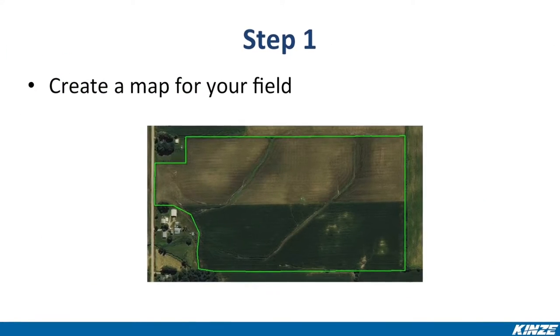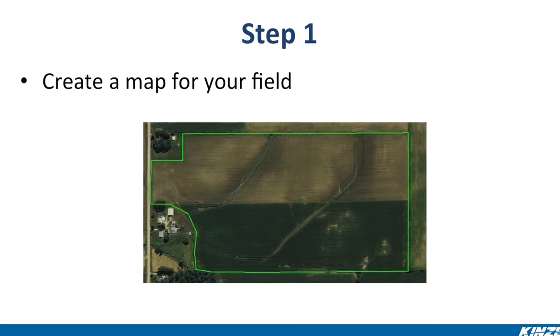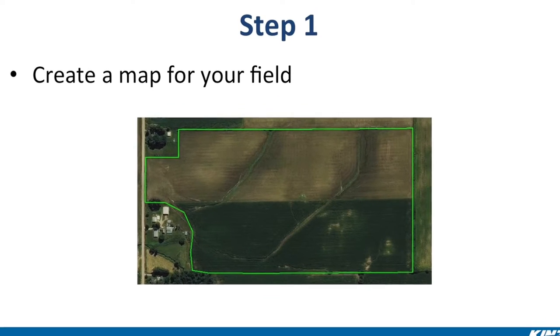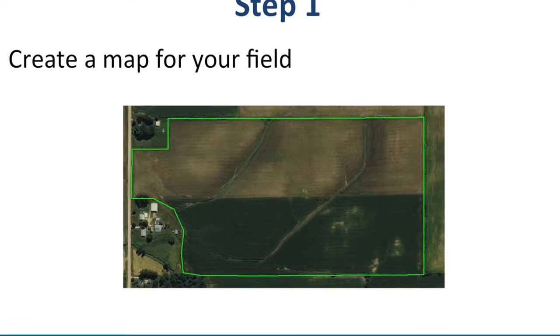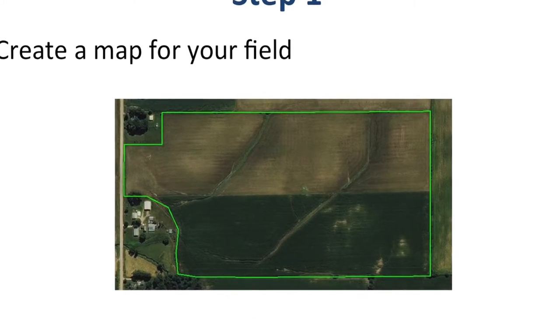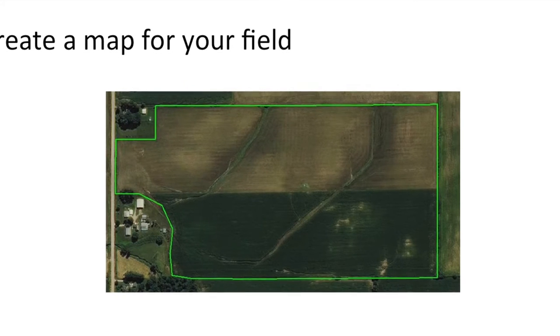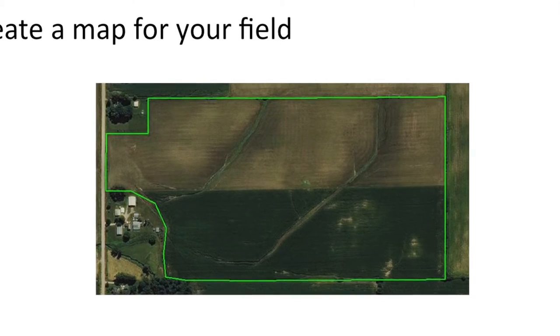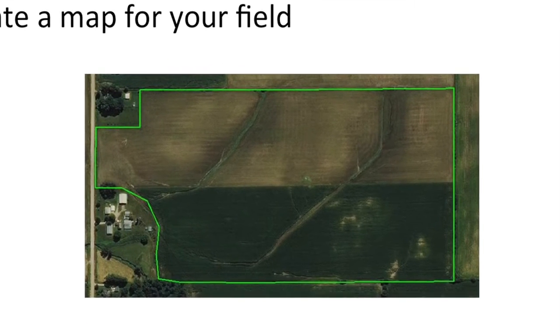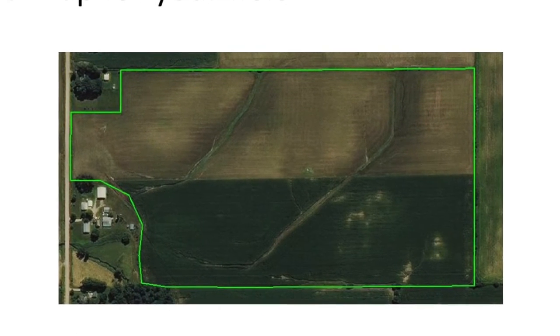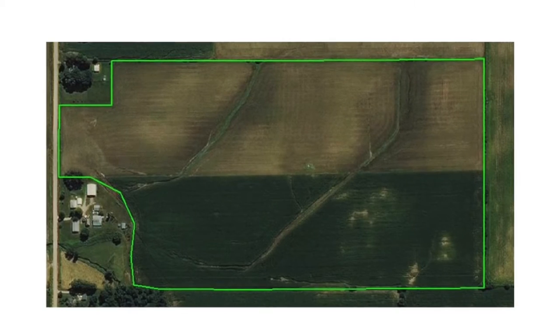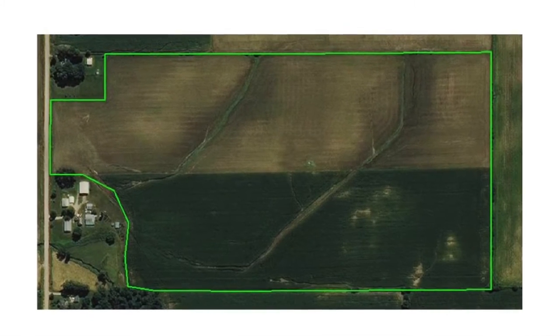Once you've selected your mapping software, the first step in the prescription creation process is to create a general border map. In the field you see on your screen, we've only created an exterior border for the field, and that's highlighted in green.